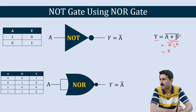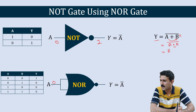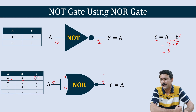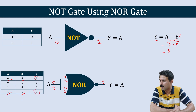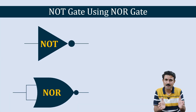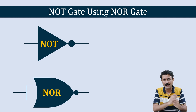Finally our output Y will be A bar. We verify through the truth table: if input to the NOT gate is 0, output is 1. If input to this circuit is 0, both inputs to the NOR gate are 0-0, and the output is 1 — it is inverting. If input is 1, both inputs are 1-1, and the output is 0 — again inverting. That is how you create a NOT gate using NOR gate.